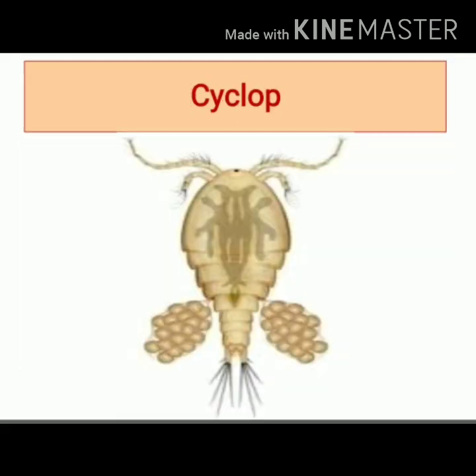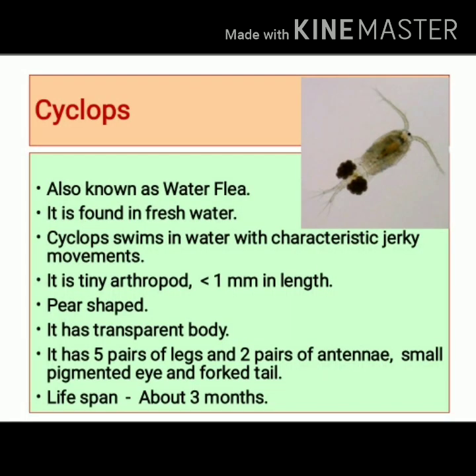Another arthropod is Cyclops, also known as Waterflea. It is found in fresh water and while swimming it shows characteristic jerky movements. Cyclops is a tiny arthropod, less than 1 mm in length. It is pear-shaped and has a transparent body.